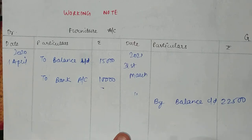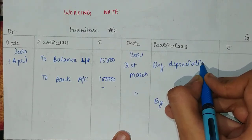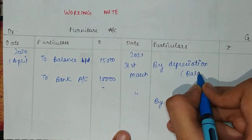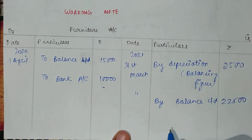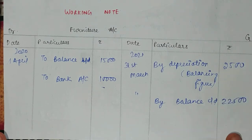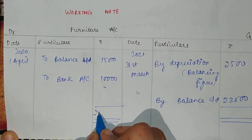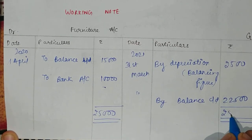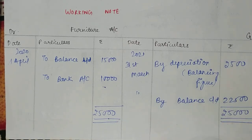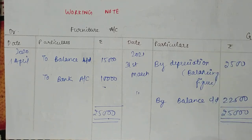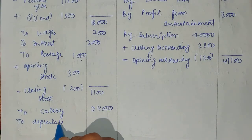Since the closing balance is $22,500 and the total is $25,000, the value has been reduced — this means there is depreciation. The depreciation is the balancing figure — $25,000 minus $22,500 equals $2,500. So simply, we have the depreciation amount as a balancing figure. We total both sides, close the account. At the end, the balancing figure is the depreciation amount, which we show on the expenditure side of the income and expenditure account.